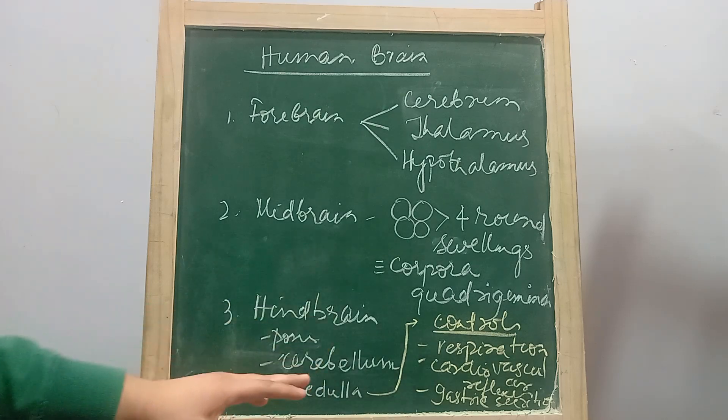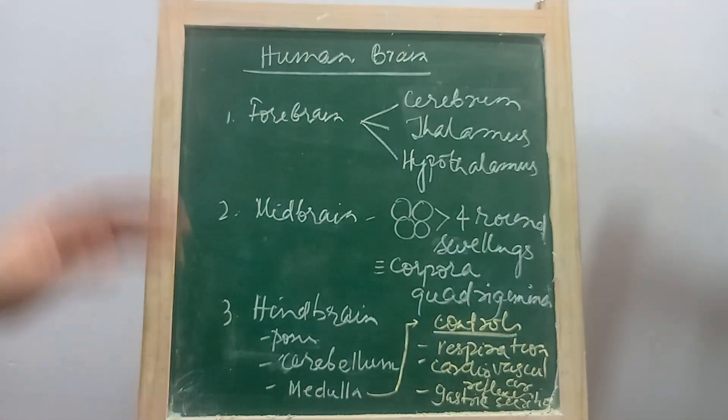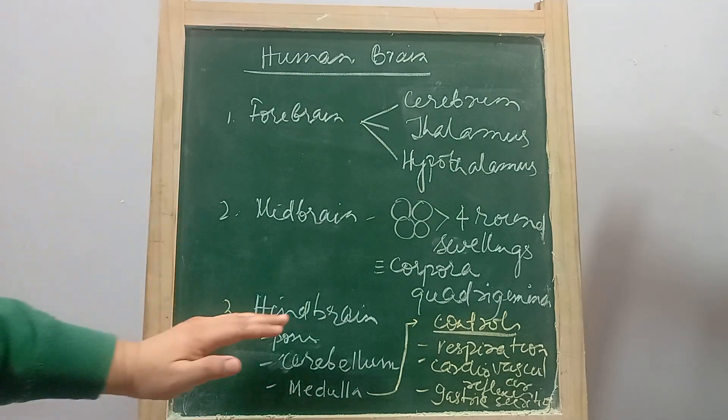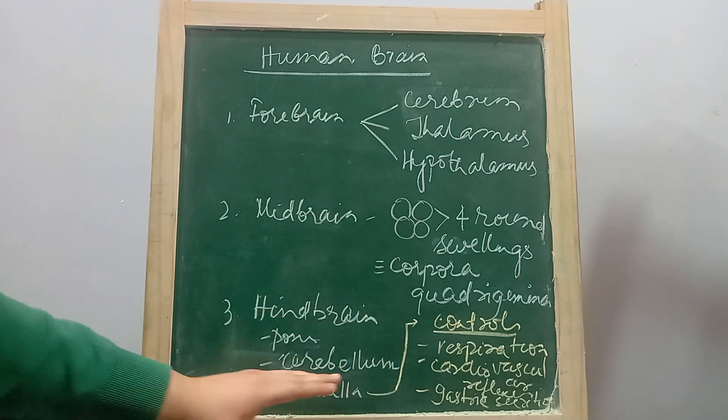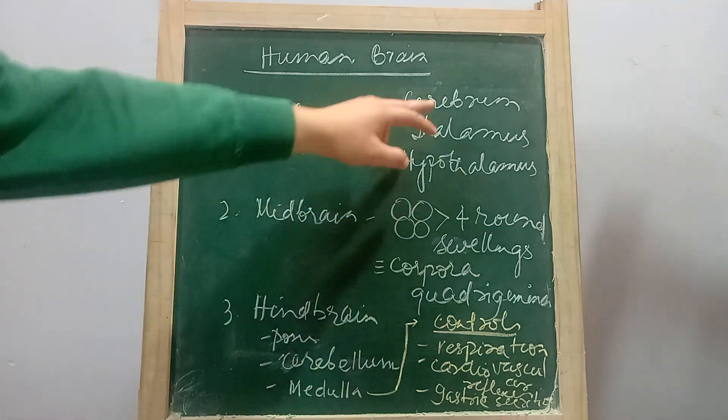The hindbrain is the back portion of the brain which is divided into three parts: pons, cerebellum, and medulla.